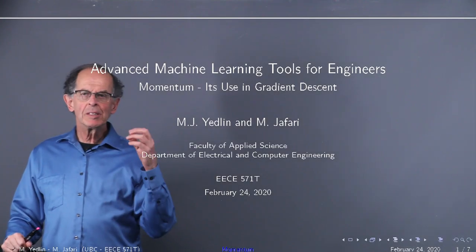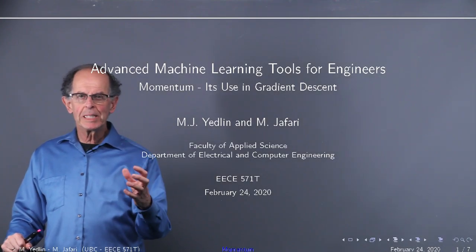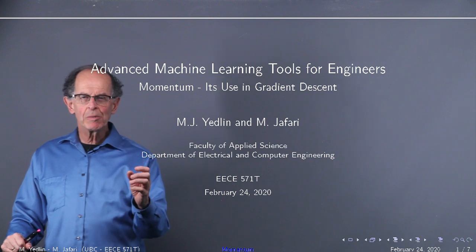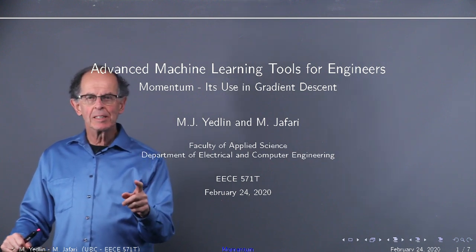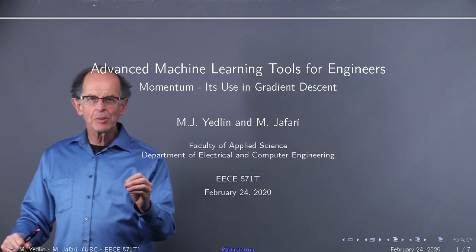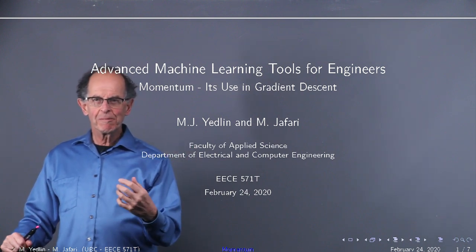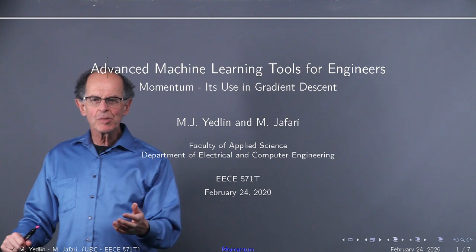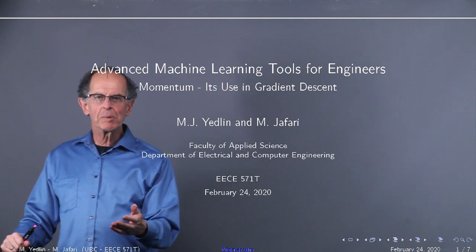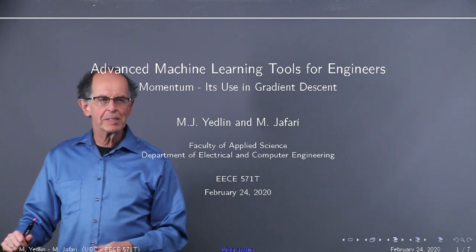Momentum. We are going to look at its use in gradient descent. We know that gradient descent is the main feature of going down some surface to find the best solution, the best weights and biases for our neural network configuration.